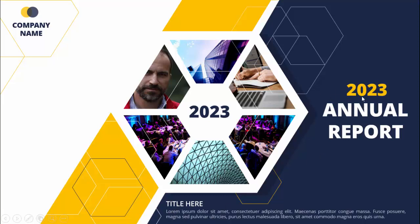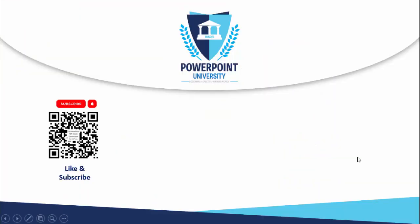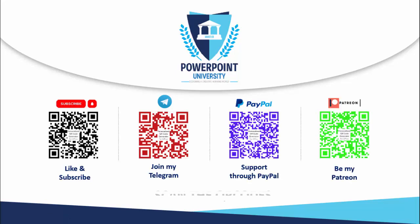You can put the main title which is '2023 Annual Report.' If you have not subscribed to my channel, please subscribe and enable the bell notification icon. You can join my Telegram group with the link provided, and if you'd like to support my channel you can do so through PayPal or Patreon. Let's start the tutorial.